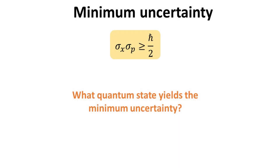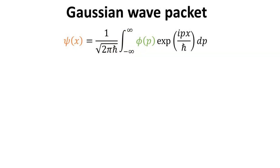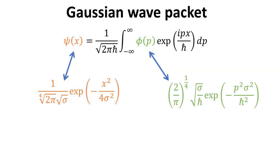We can also ask: what quantum state yields the minimum uncertainty of exactly h-bar divided by 2? As we shall see, a Gaussian wave function allows us to achieve such minimum uncertainty. We begin by introducing the mathematical form of the Gaussian wave function. Recall we can express the wave function in the position or momentum representation, denoted as psi of x and phi of p, and they are related via the Fourier transformation.